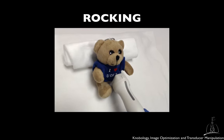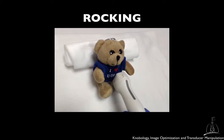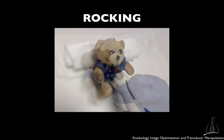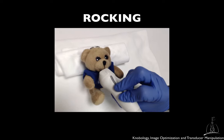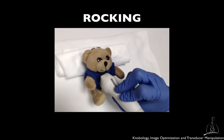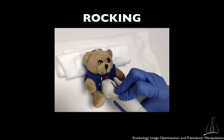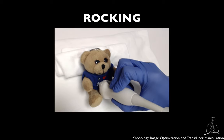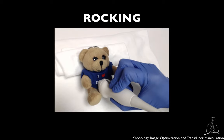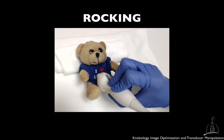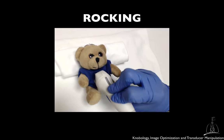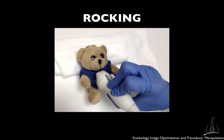Rocking is the movement of the probe along its main axis, changing only the angle of inclination of the transducer in this axis while maintaining a fixed point on the body. Rocking the transducer toward or away from the marker will allow you to center the area of interest or to extend the field of view. This movement is also called in-plane motion.